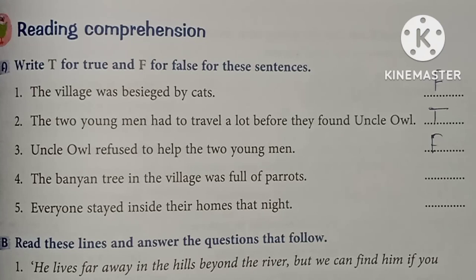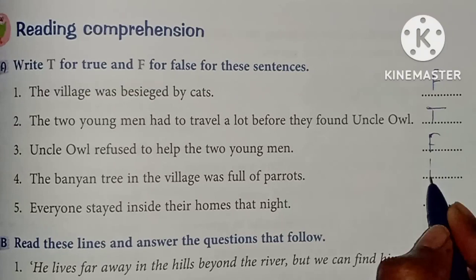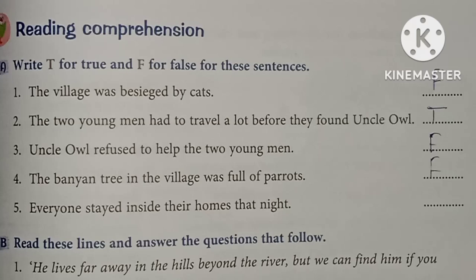Now question number four: the banyan trees in the village was full of parrots. Jho banyan trees tha, jho village mein tha — toh kya woh pura parrot se bhar gya tha? Toh nahi, woh owl se bhar gya tha. Toh yoh bhi false hai.